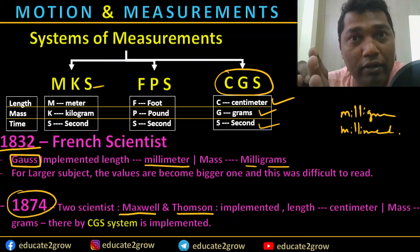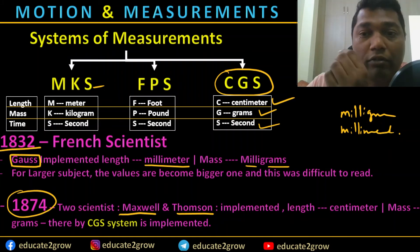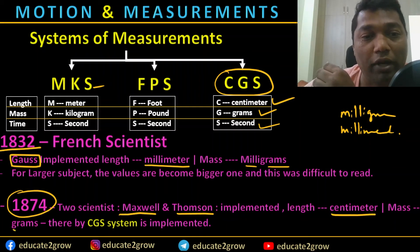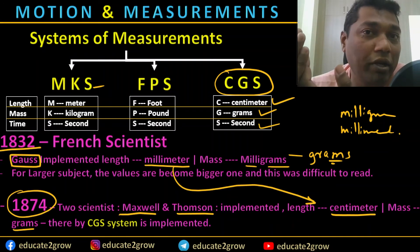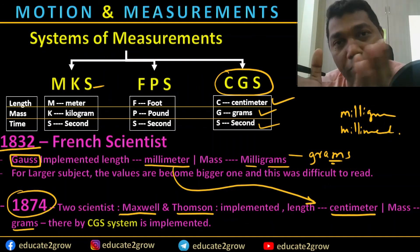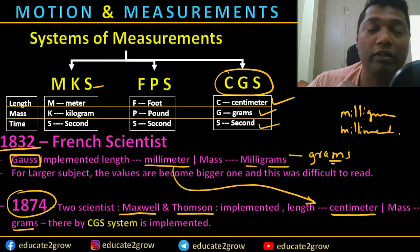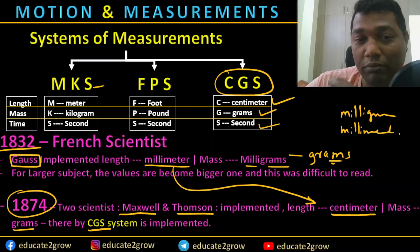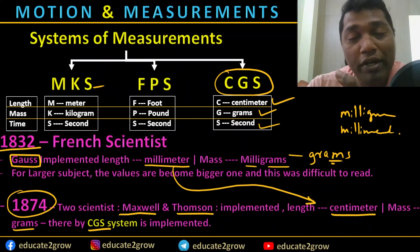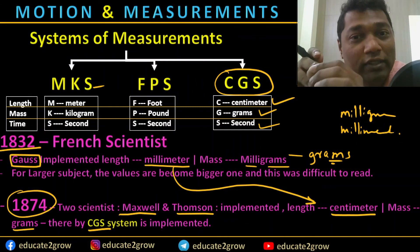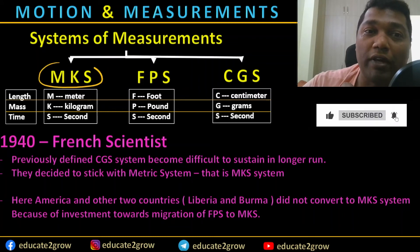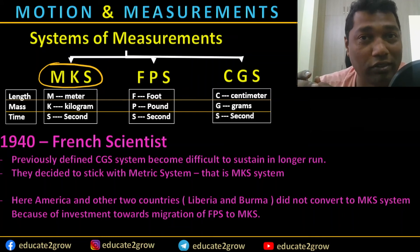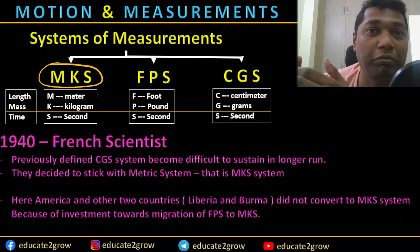In 1874, two more French scientists — Maxwell and Thompson — built further on Gauss's theory. They modified the units: length as centimeter and mass as grams — converting from millimeter to centimeter and milligram to gram. This was slightly better for larger number systems, but still difficult to sustain. So they defined the CGS system, which continued for a certain period. Then in 1940, French scientists converted back, saying they would stick to the MKS system as the metric standard because of the numbering system. They also suggested converting FPS to MKS.